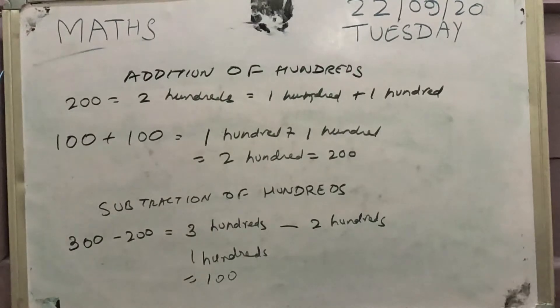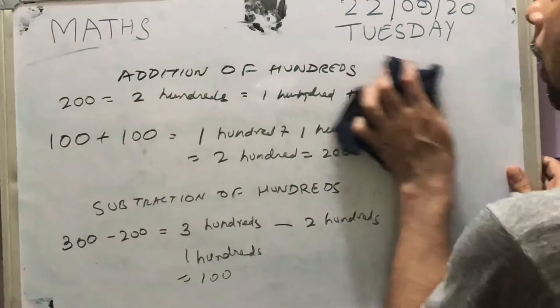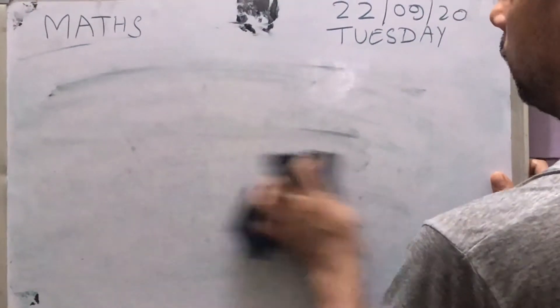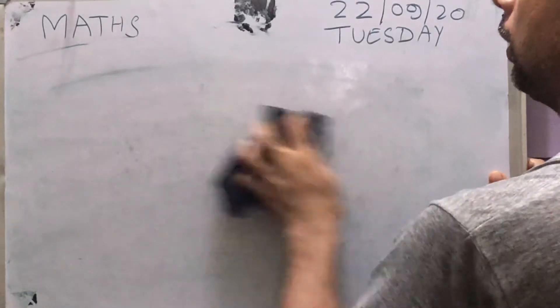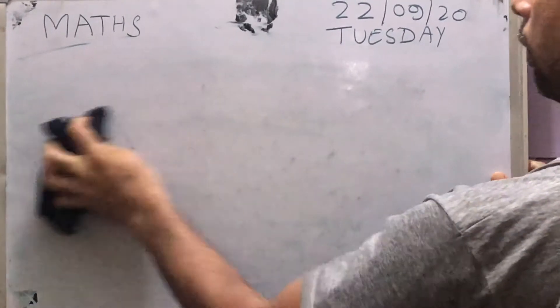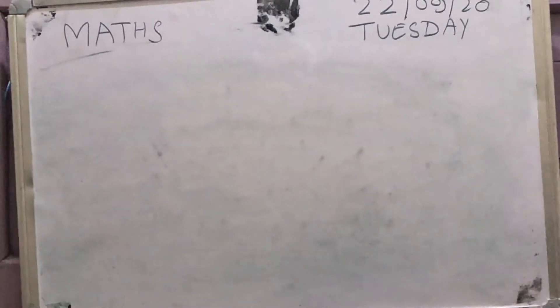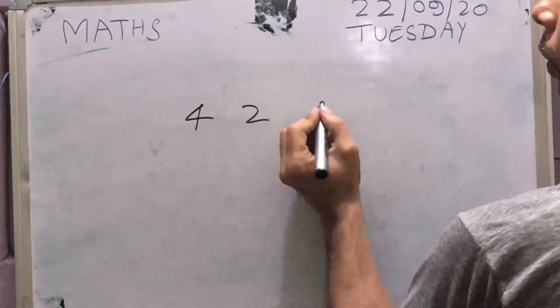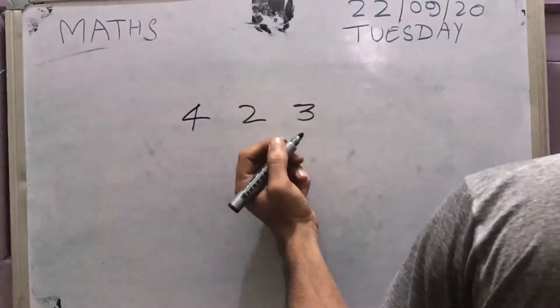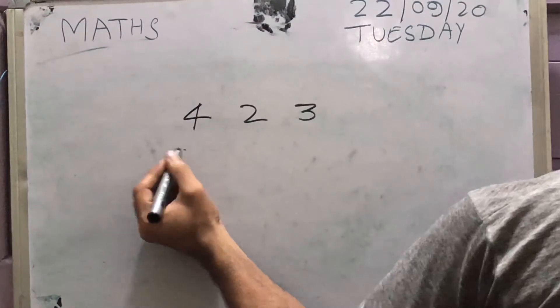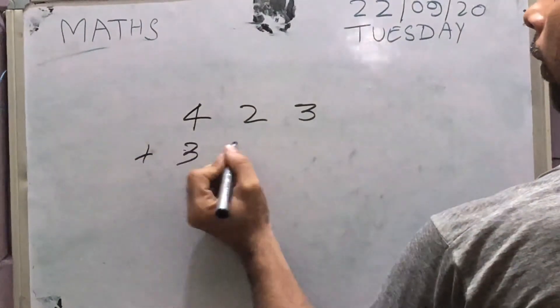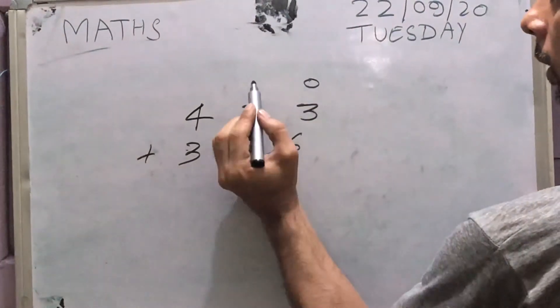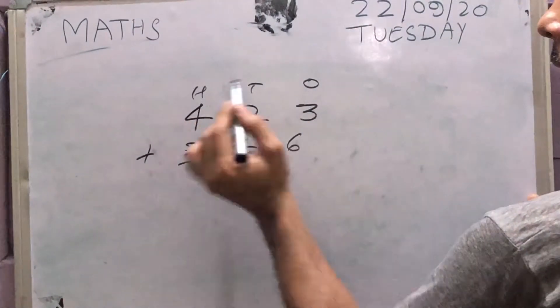So now we move to addition of 3 digit numbers without carrying. You have to add basically 3 digit numbers. This is ones place, this is tens place, and this is hundreds place. I think you already know about this.